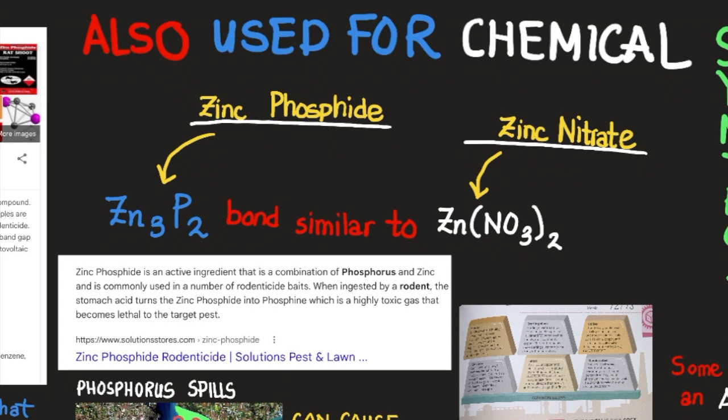That has to do with the fact that nitrogen and oxygen are bound together and so they oxidize themselves first, and then whatever is left to oxidize oxidizes with the zinc. While here we have two phosphorus atoms oxidizing three zinc atoms, and due to differences in energies and net structures, we need different amounts of atoms to create stability.